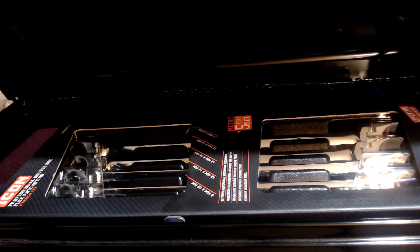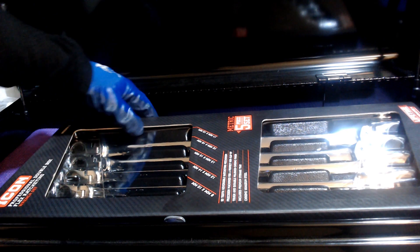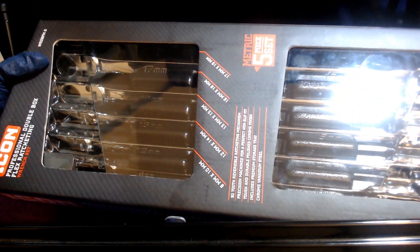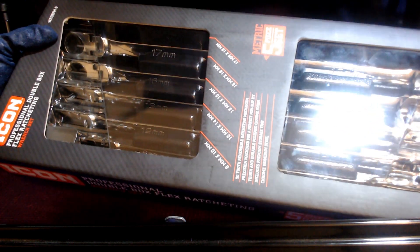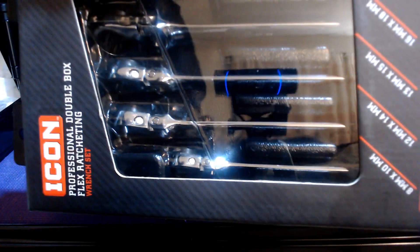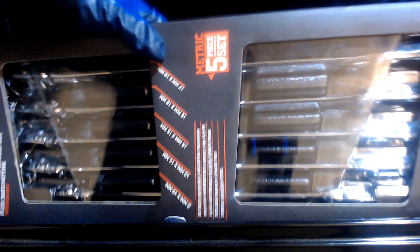How's it going mechanatics, today we're gonna be going over Icon's professional ratcheting box flex wrench set. It's a five-piece wrench set made by Icon. These will run you I believe $220 original price.